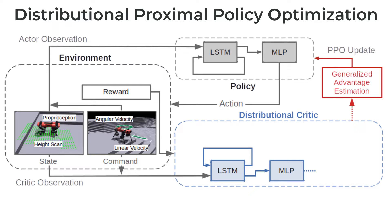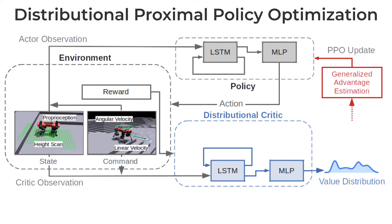Embedding risk sensitivity within the reinforcement learning algorithm is achieved by integrating a distributional critic into the proximal policy optimization algorithm. This critic captures the intrinsic uncertainty in the value function, producing a value distribution which models the probability of obtaining some return in a given state. The value distribution captures the intrinsic uncertainty of the environment, enabling the assessment of risk associated with different states.